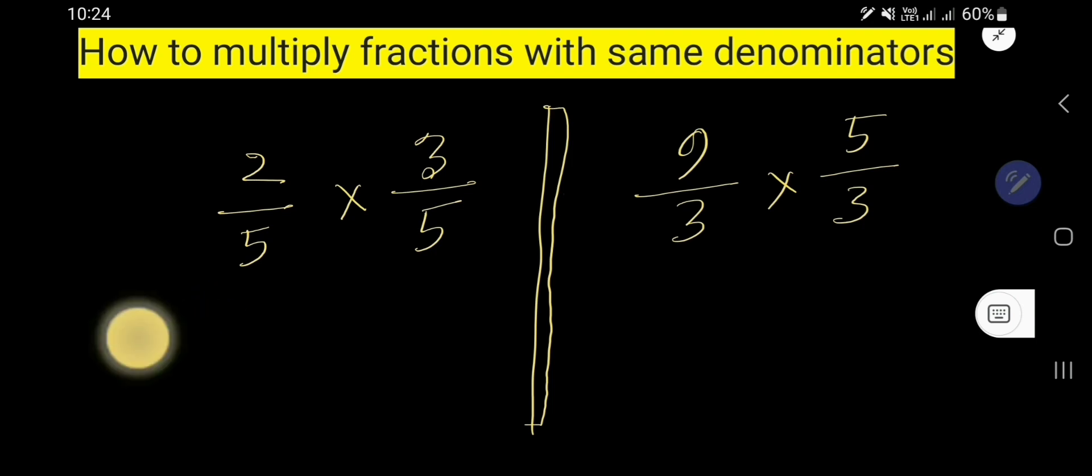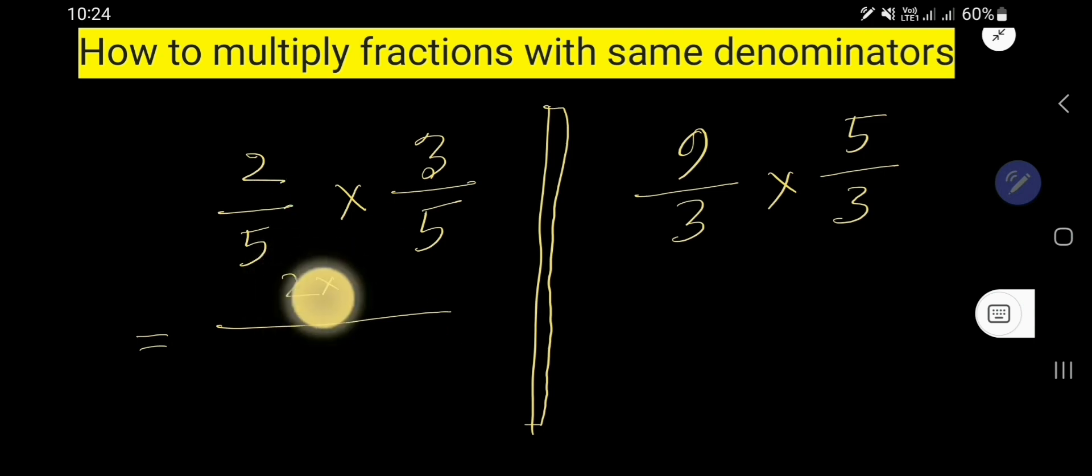What you need is to multiply top-to-top numbers and bottom-to-bottom numbers. So to multiply this fraction with this fraction, just multiply the top numbers together and you are getting the new numerator.